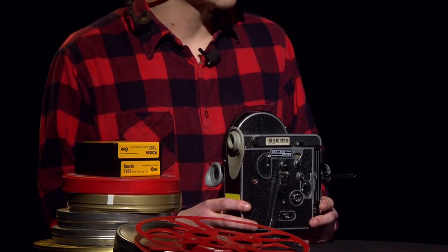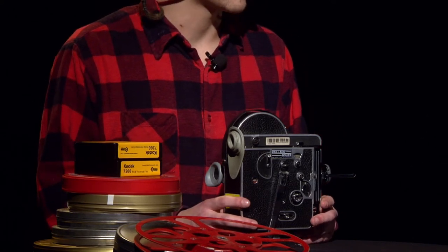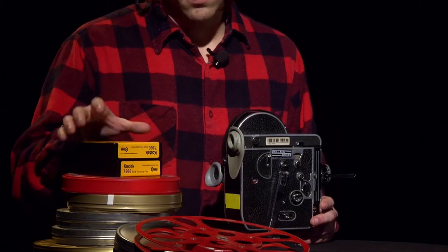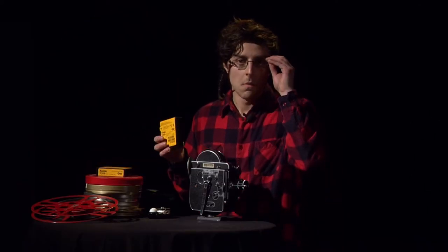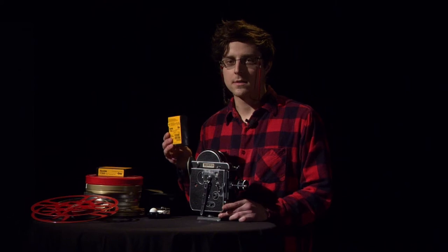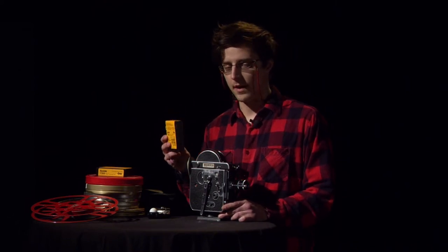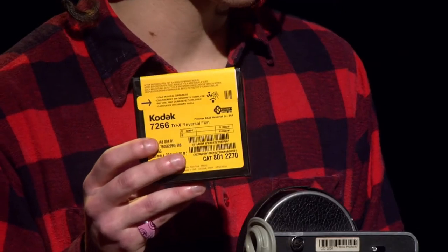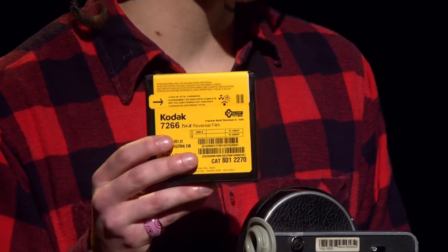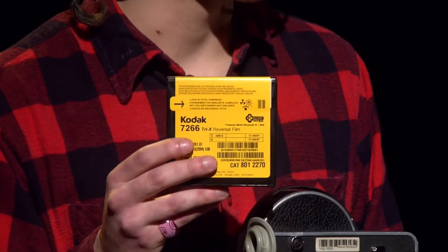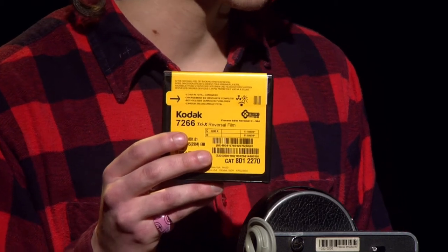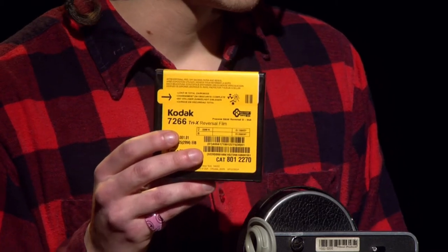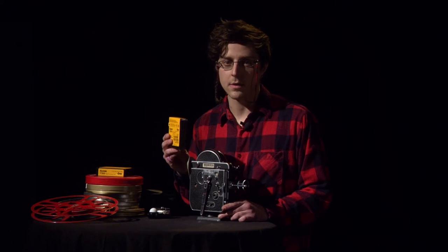The first step in achieving a well-composed image on film is picking the correct film stock. The speed of the film is determined by how fast it reacts to light. Indoor film, or 200 speed, is a faster stock than outdoor film because the outdoor film is balanced for daylight. This means we are going to want to go with a faster speed since we are indoors. This is important for later when we are dealing with the light meter.